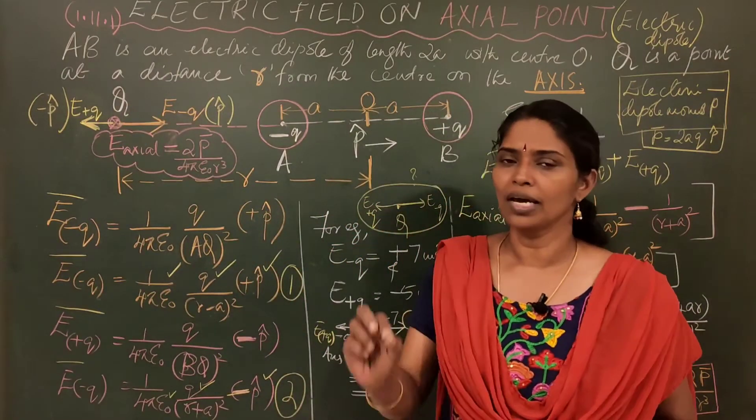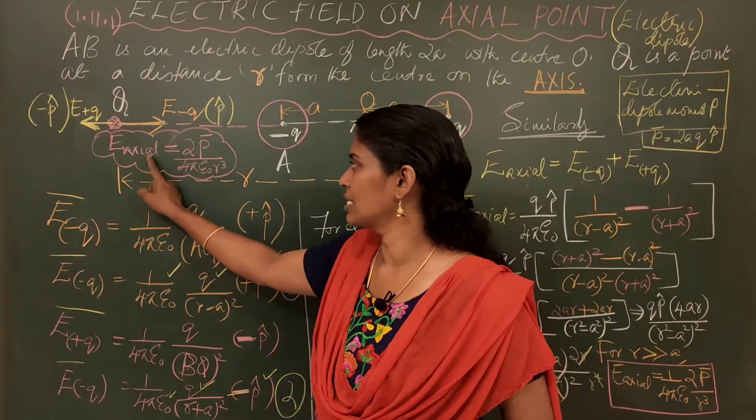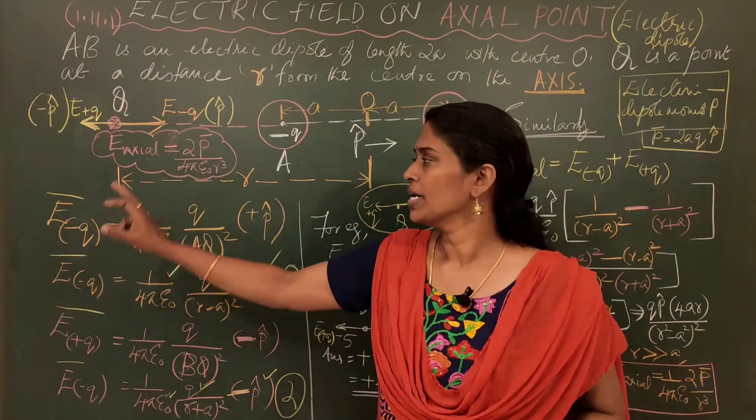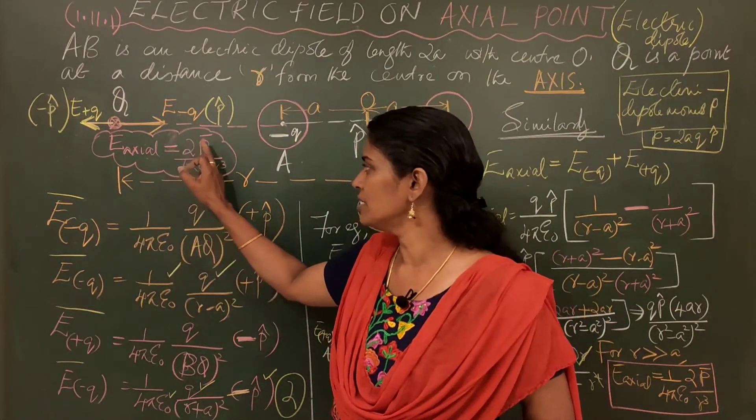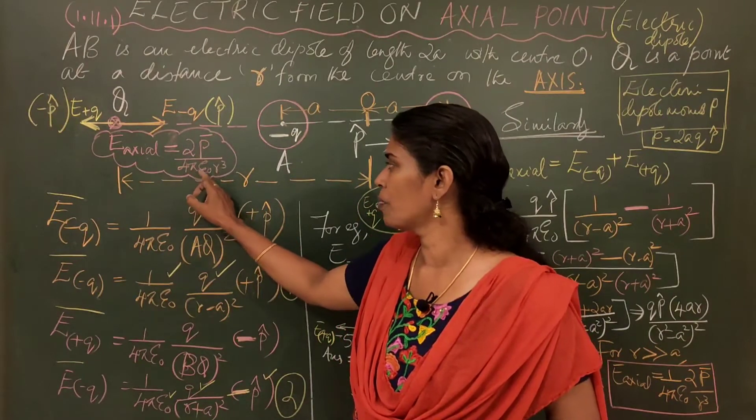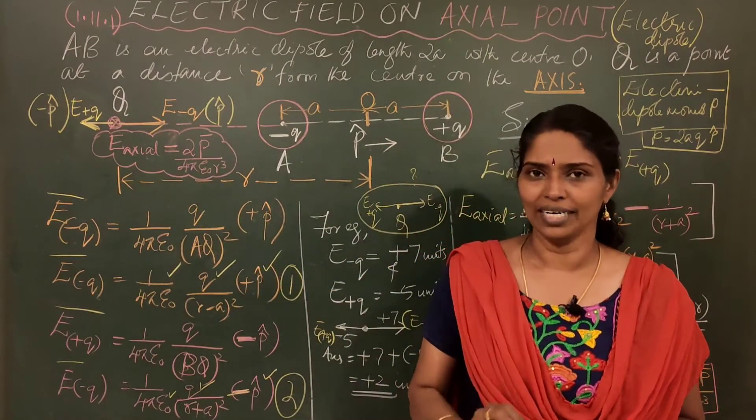That is the axial point. Hence, we write E axial. This is what you are going to find out. E axial whose value is 2P bar by 4 pi epsilon 0 R cube. How do you get it? Very simple two steps.